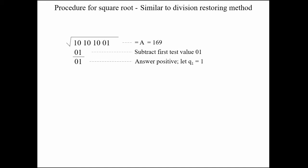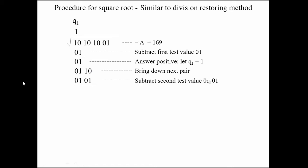We have stored Q1 = 1. Now we bring down the next pair, which is 10, along with the remainder from the previous step. The second test case value is 0, Q1, 01, giving 0, 1, 01. After subtracting, we get 0001, which is positive, so we store Q2 = 1.